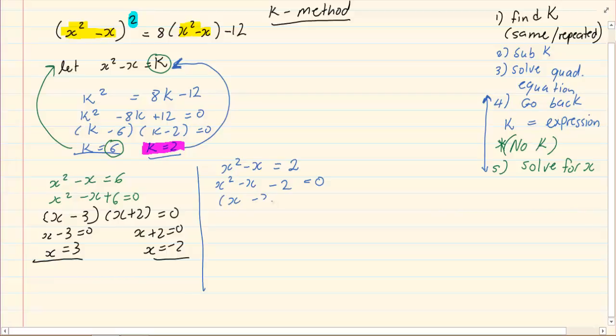(x - 2)(x + 1) = 0, x - 2 = 0, x + 1 = 0, x = 2, x = -1.